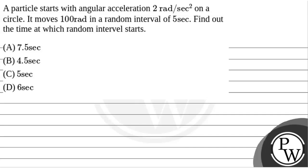Hello! Let's read the question. The question says that a particle starts with angular acceleration of 2 radians per second square on a circle. It moves 100 radians in a random interval of 5 seconds. Find out the time at which the random interval starts. So we will solve this question.